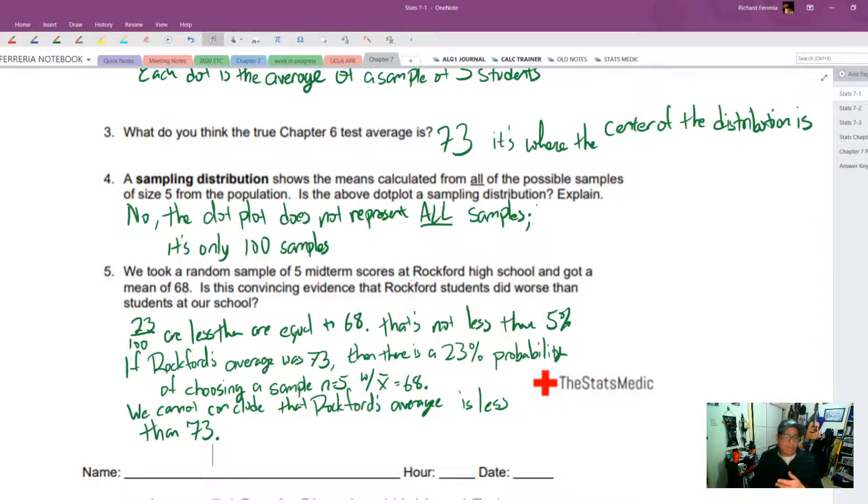However, if we got a number and it was less than five percent probable, then we would say, you know, it's most likely that the assumption we started with, the average of 73, is not true. So greater than five percent, that means we don't doubt our assumption. Less than five percent means we doubt the assumption that we started with. But we'll get into more of that later.